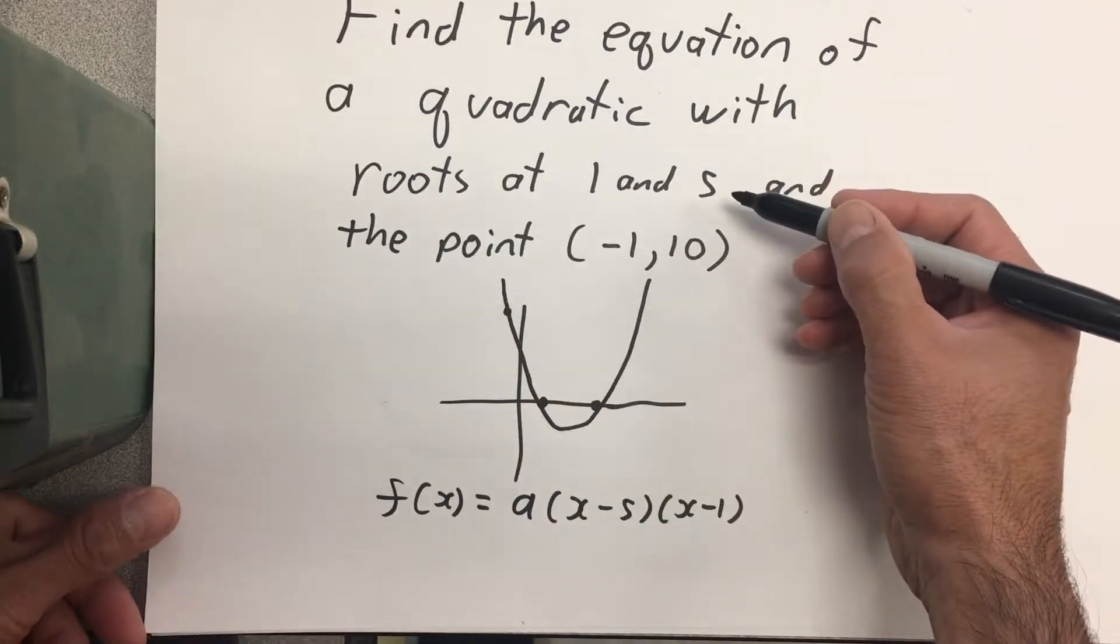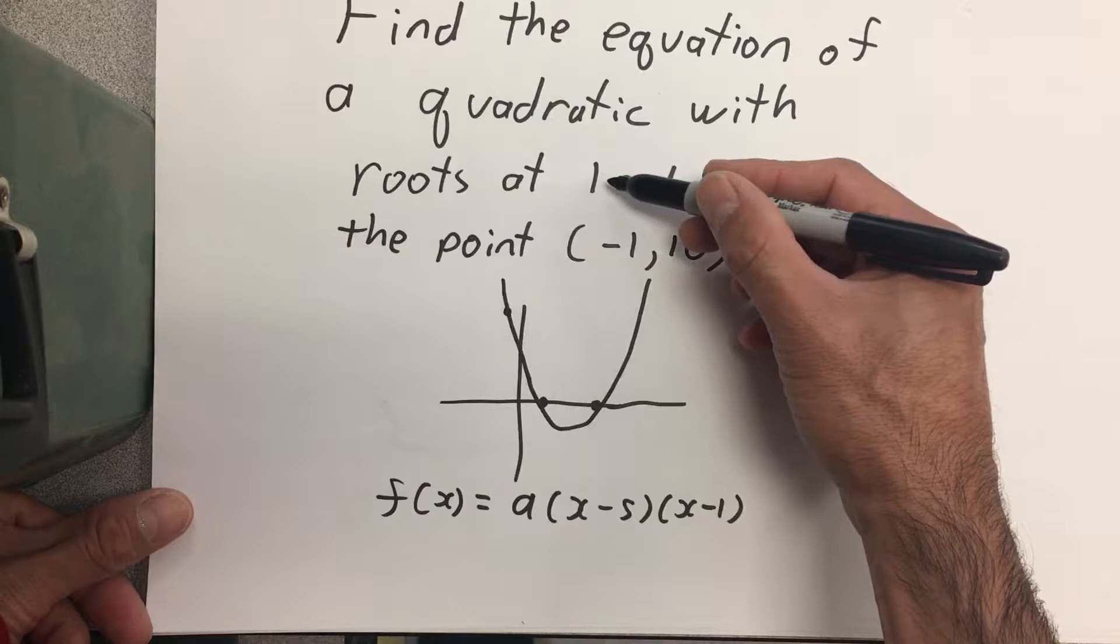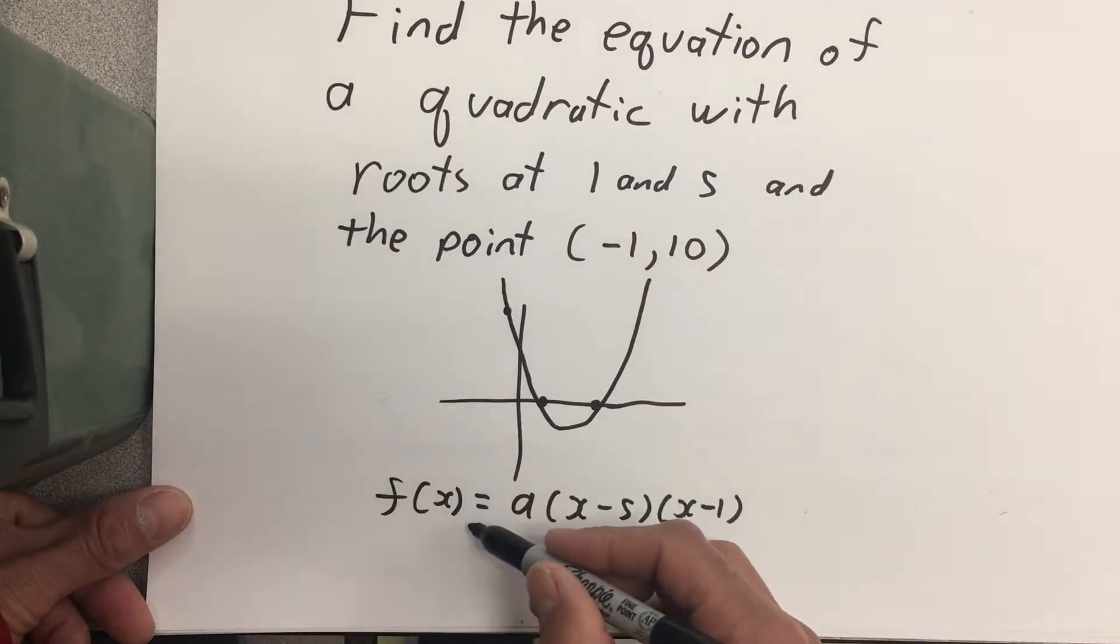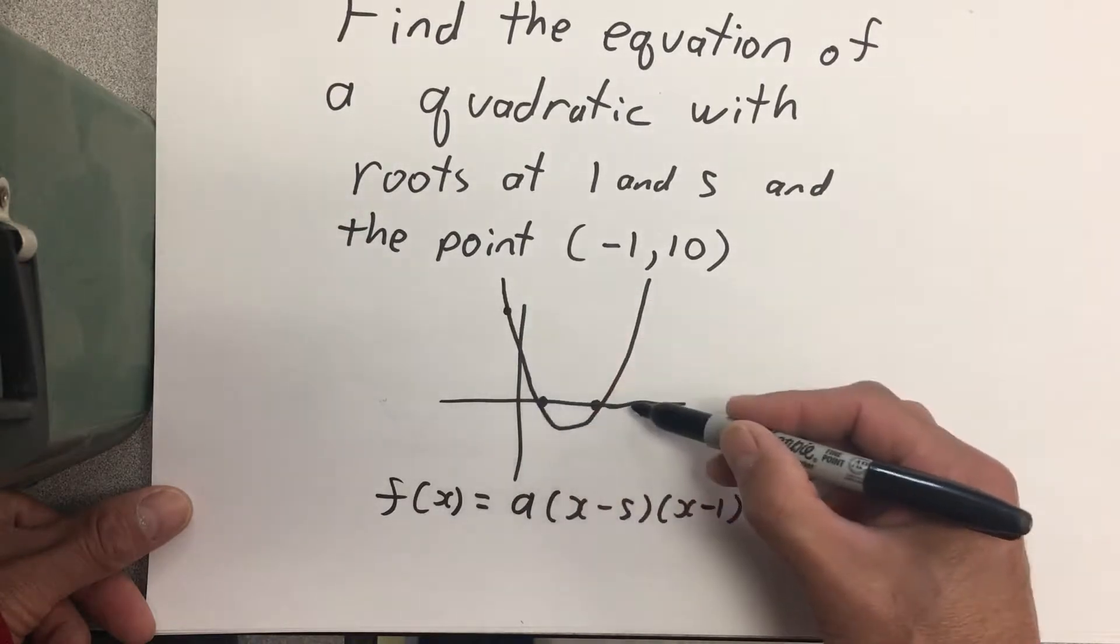So if 1 and 5 are the roots, that means if x is 1, or if x is 5, then the entire function has a value of 0, bringing the y value down to 0.